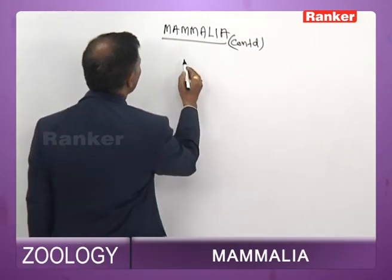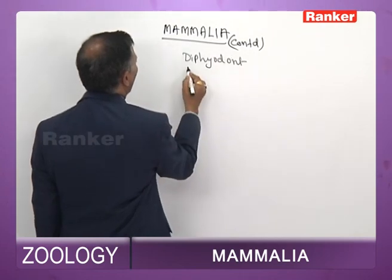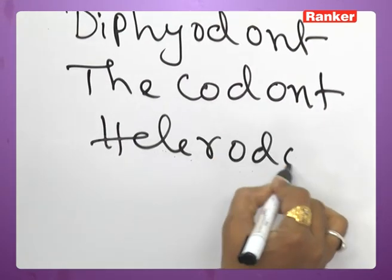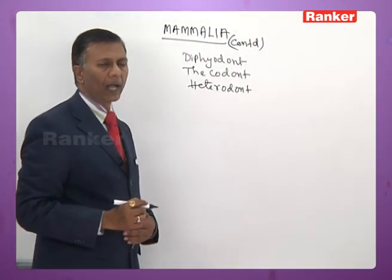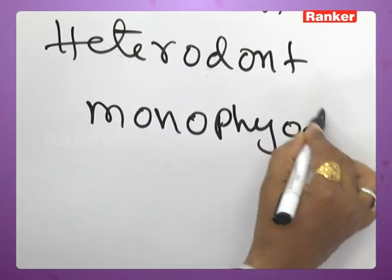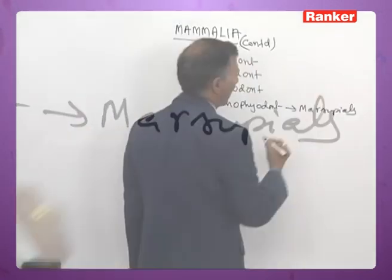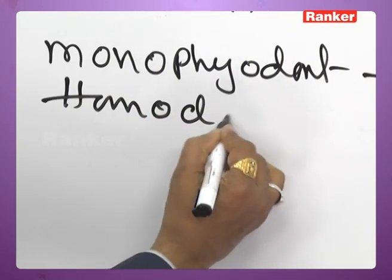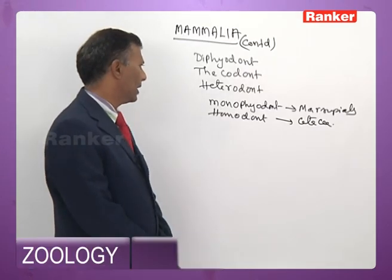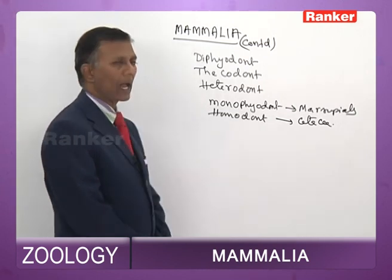In most mammals, teeth are diphyodont, thecodont, and heterodont. Monophyodont dentition is noticed in marsupials. Homodont dentition is noticed in cetaceans. Except these, in all other mammals, teeth are diphyodont, thecodont, and heterodont.